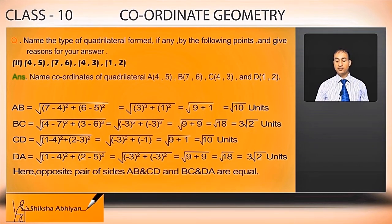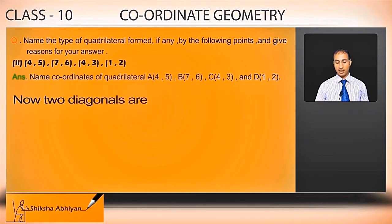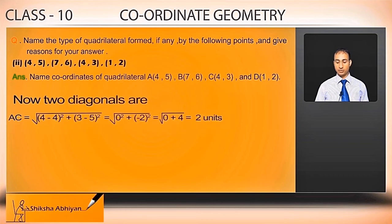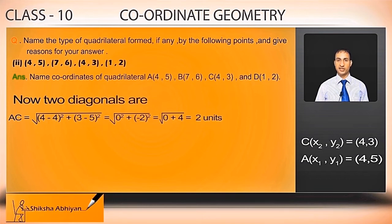The opposite pair of sides AB and CD are equal. Now finding the two diagonals: diagonal AC equals under root of (4 minus 4) whole square plus (3 minus 5) whole square, taking C(4,3) as (x2,y2) and A(4,5) as (x1,y1). 4 minus 4 is 0 and 3 minus 5 is minus 2 whole square, giving 2 units.